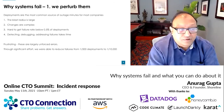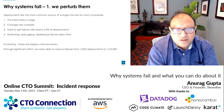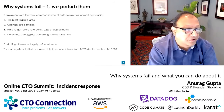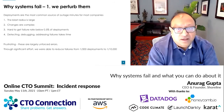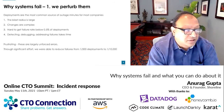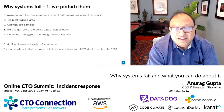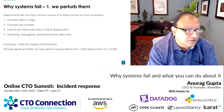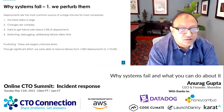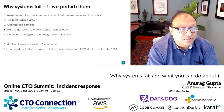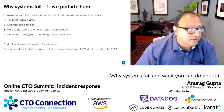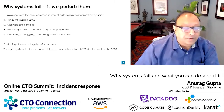It's hard to get failure rates down below maybe 1 in 100 or 1 in 200, because there's human error involved. And detecting, debugging, and addressing failures take time. That's frustrating because these are largely unforced errors. At AWS, we were able to significantly reduce our failure rate — let me talk about how.